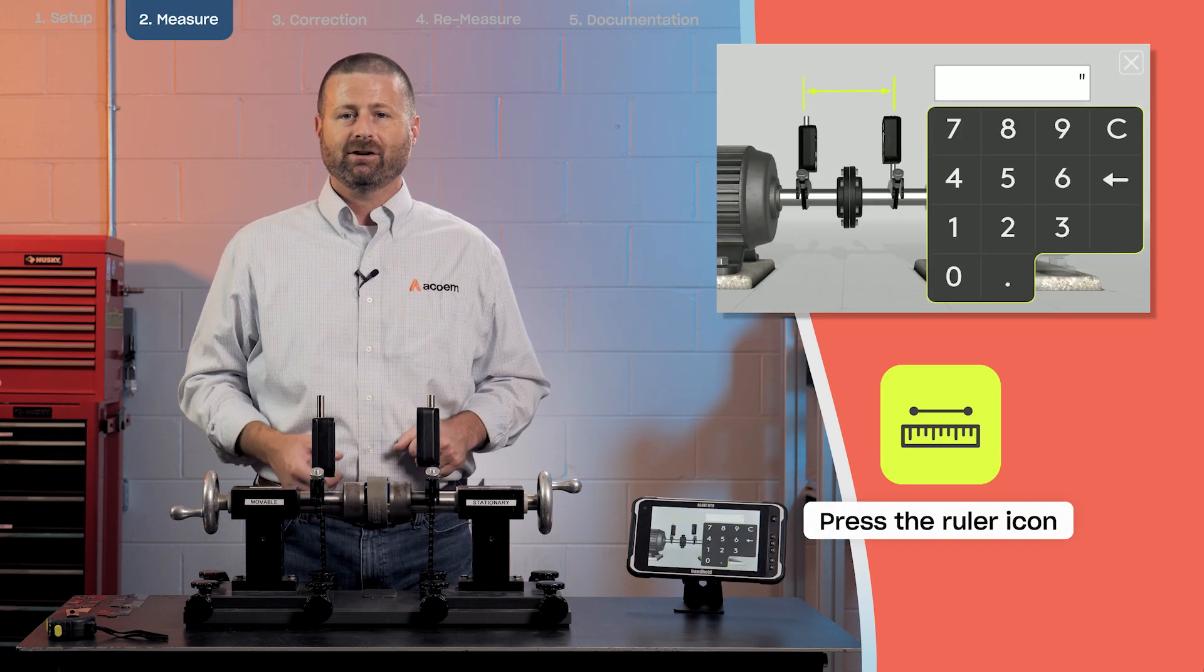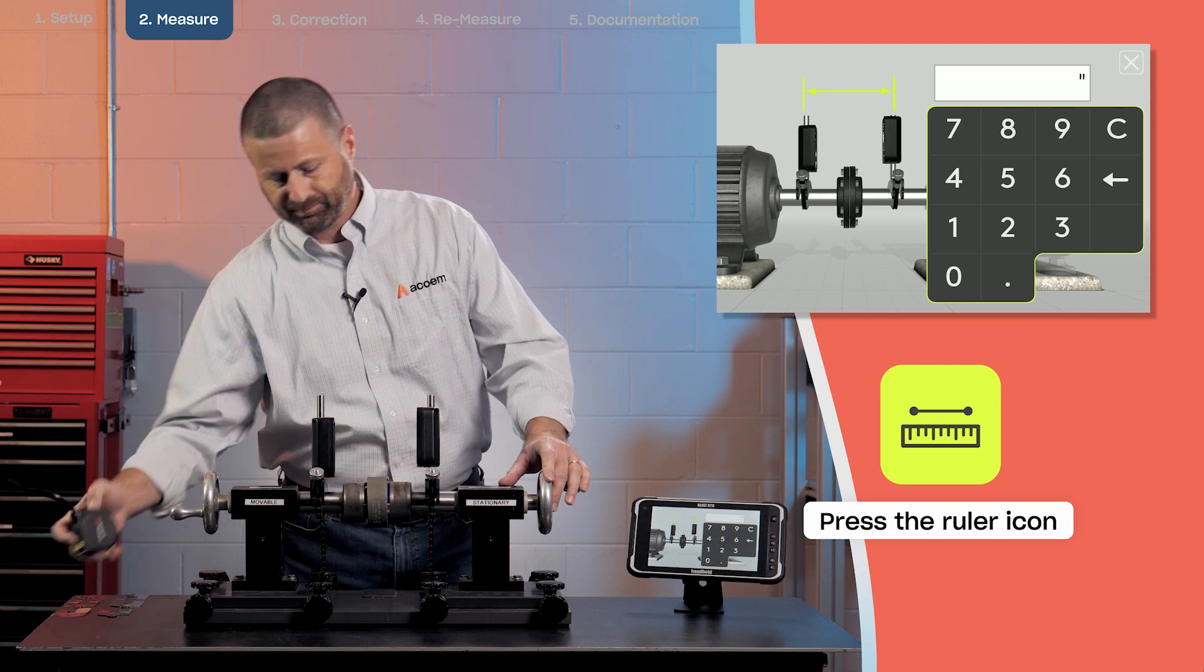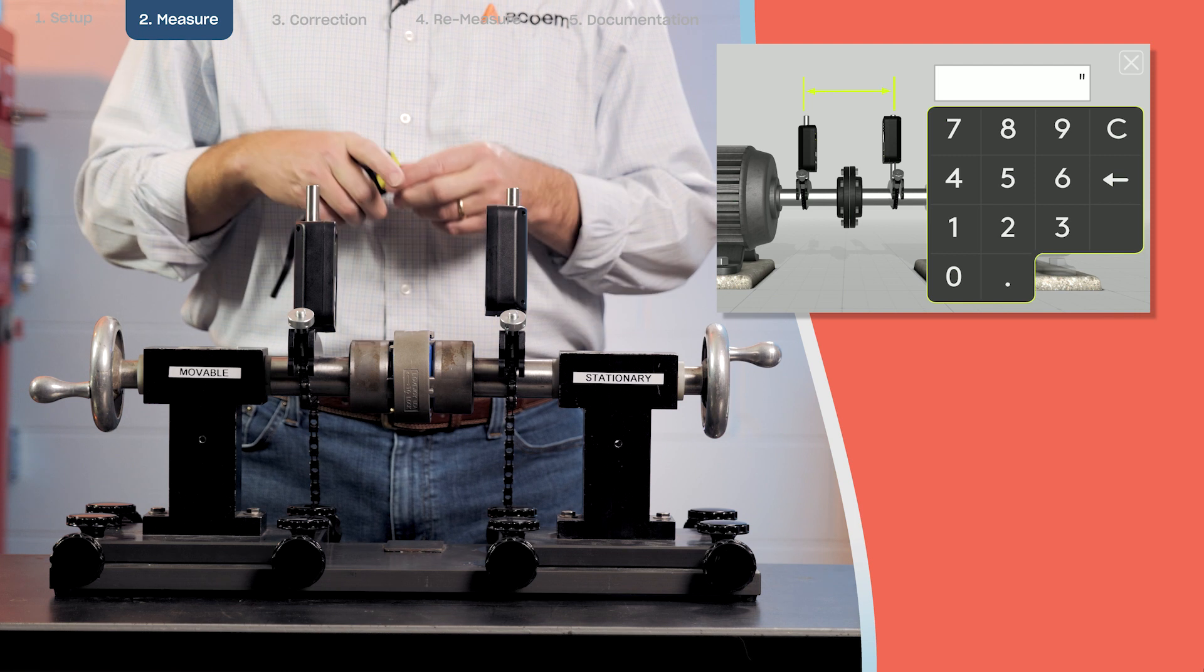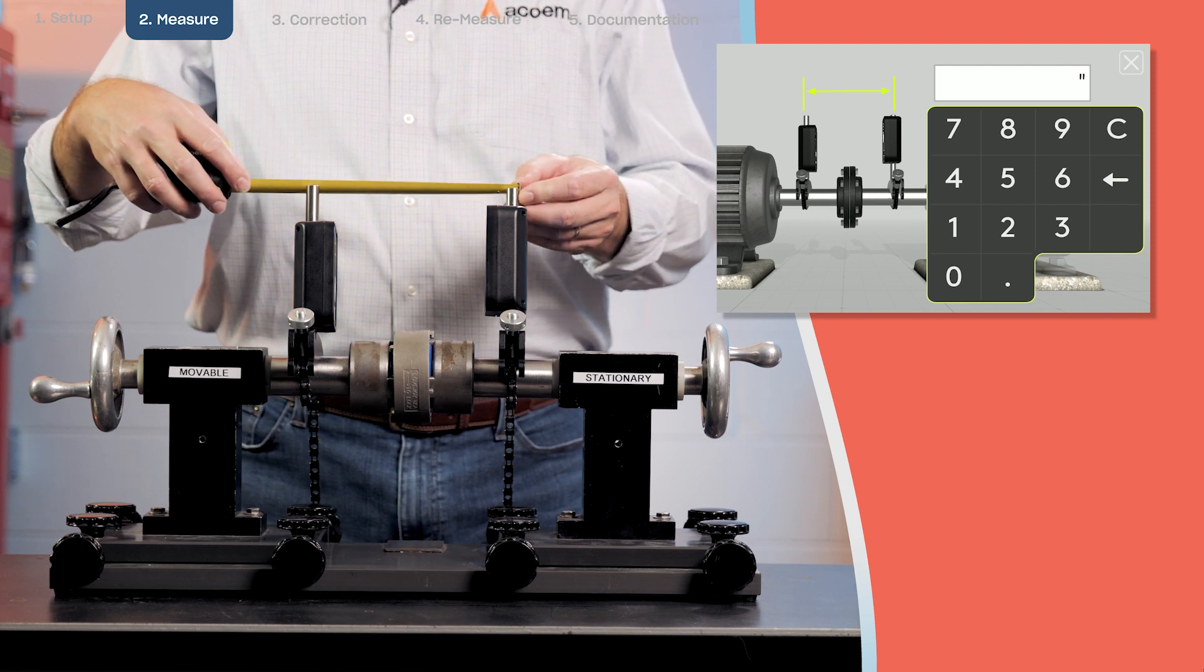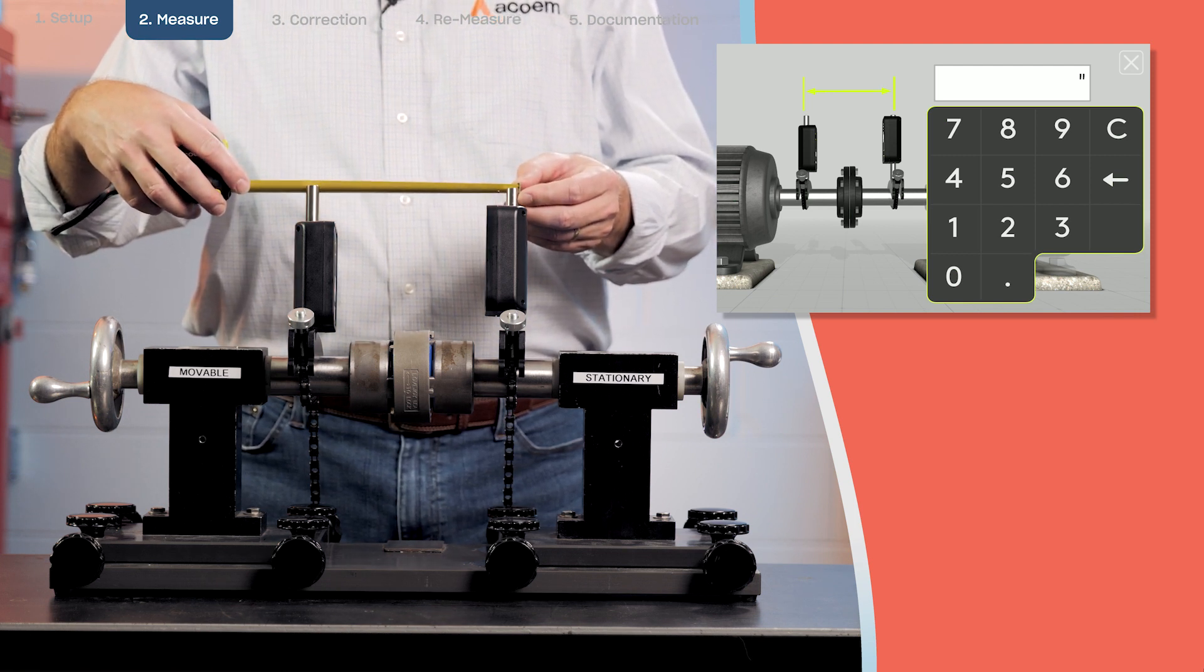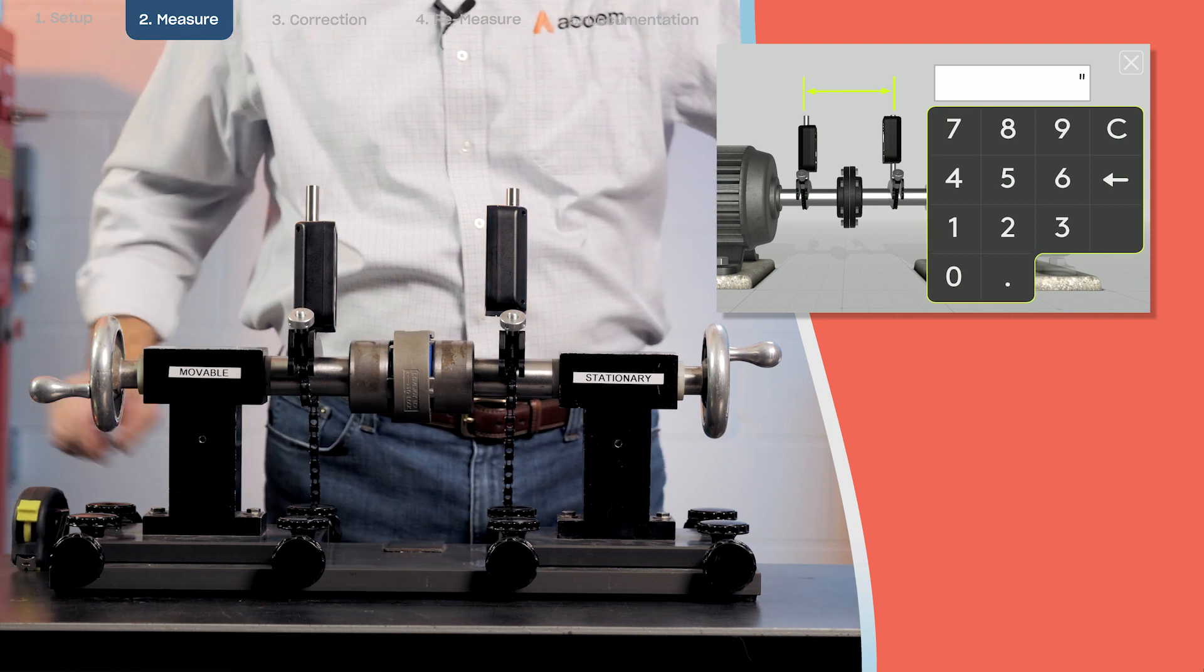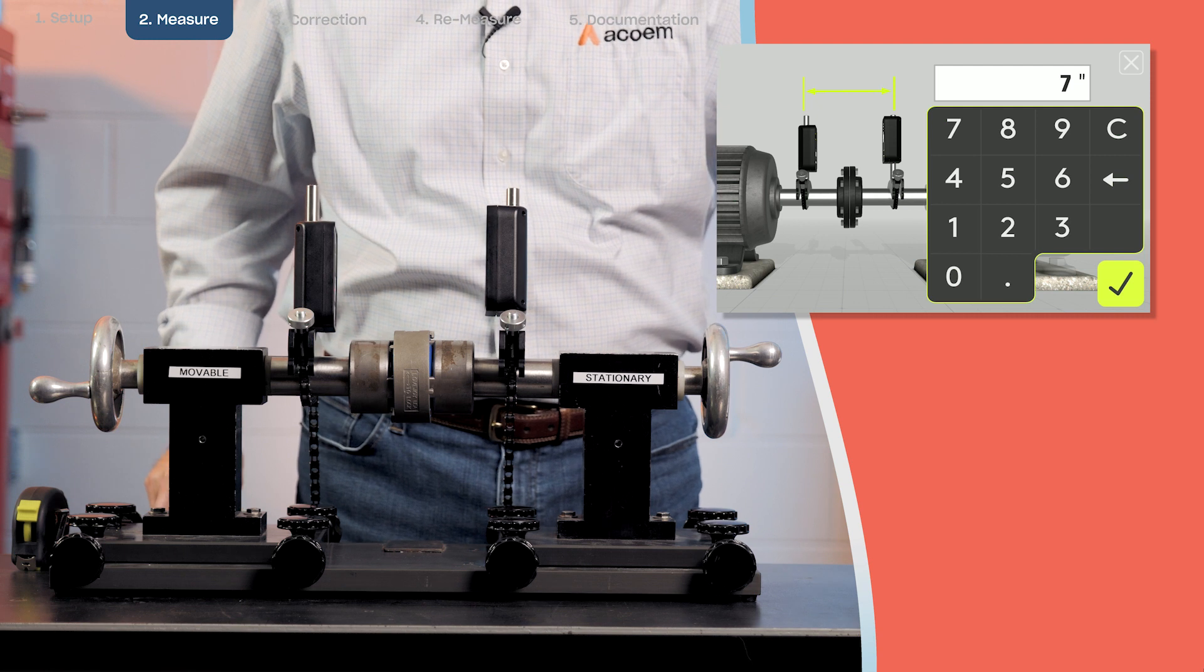Next step is going to be to enter the dimensions of the machine. First thing I need to do is enter from M sensor to S sensor. This should be done within about the nearest eighth of an inch. In this case we have seven inches. So we have seven, check.